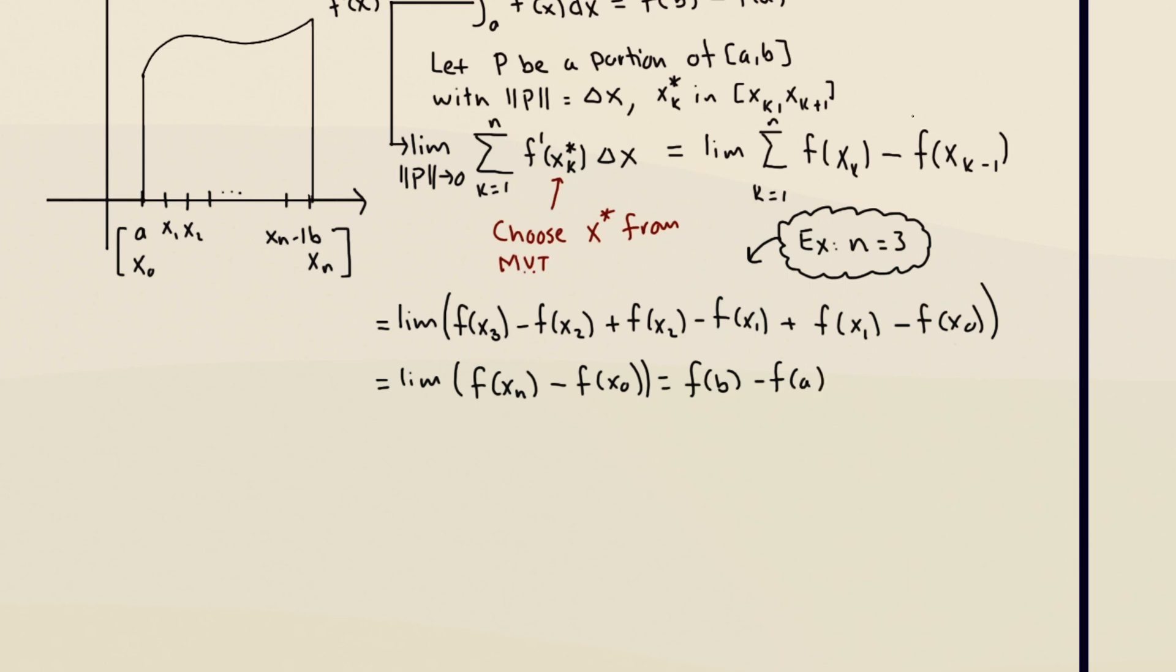And then xn is b and x0 is a. So this is always just f of b minus f of a. Because in the Riemann sums definition, I'm allowed to choose any point in the subinterval. So I always just use the mean value theorem. So the fundamental theorem is really just an application of the mean value theorem.